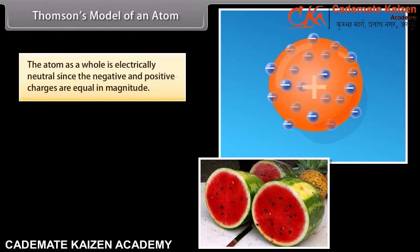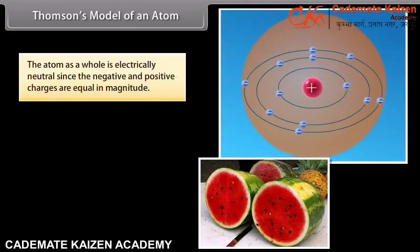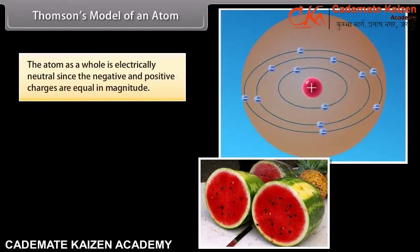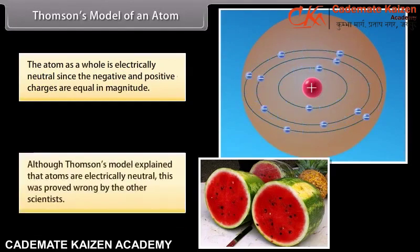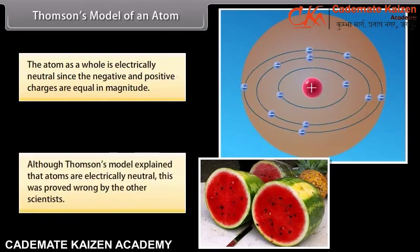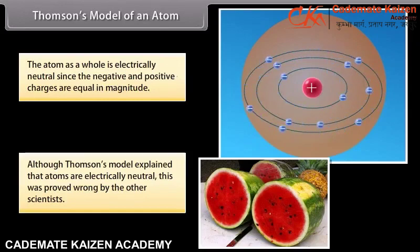The atom as a whole is electrically neutral since the negative and positive charges are equal in magnitude. Although Thomson's model explained that atoms are electrically neutral, this was proved wrong by other scientists.